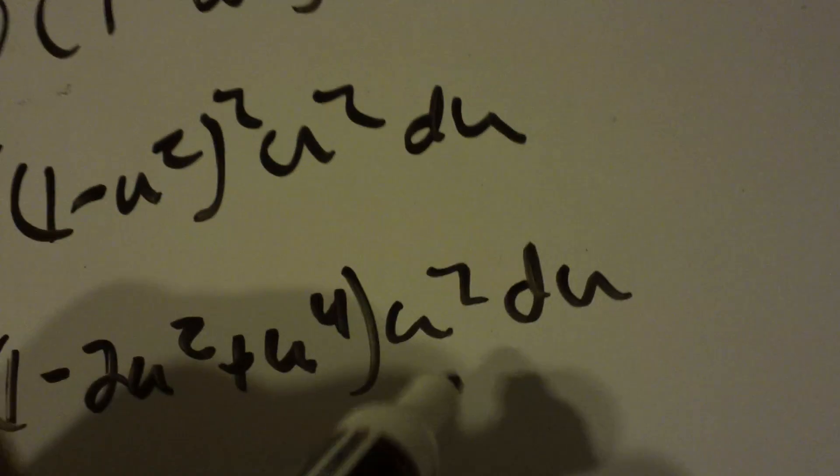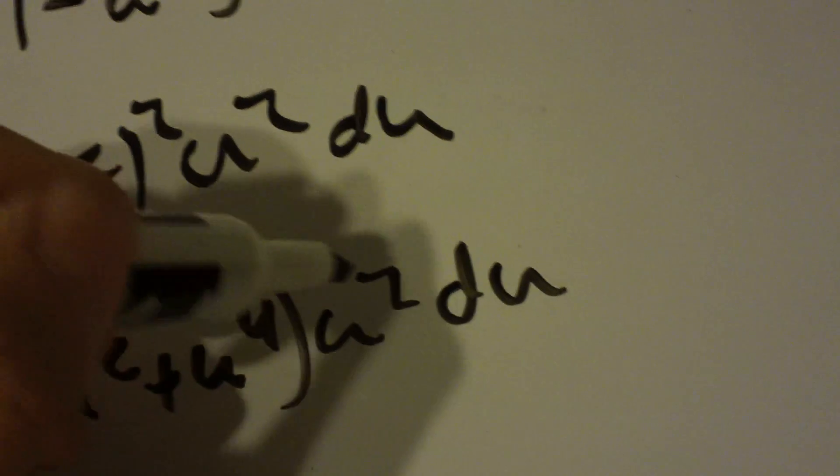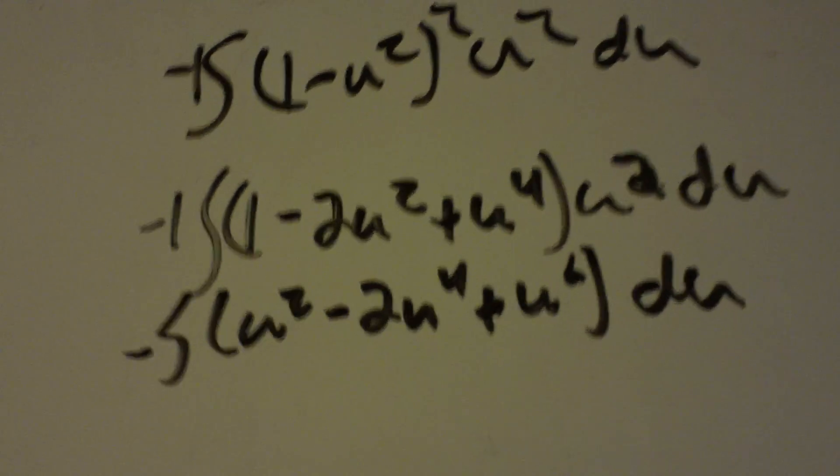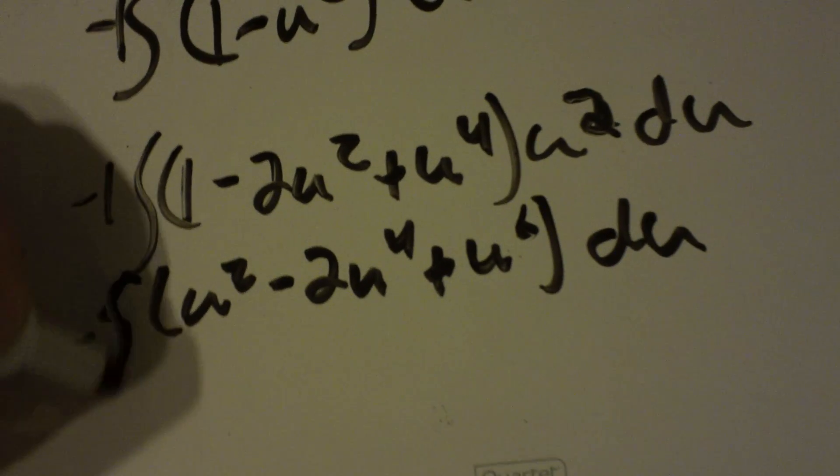Now I need to distribute this u to u squared right here. Oops, sorry, it looks like a 7, it's a 2. So it just equals u squared minus 2u to the 4th plus u to the 6th. And that du still stays out there. That's an integral, sorry. My sloppy handwriting.